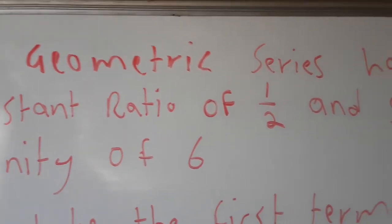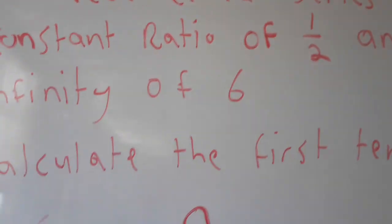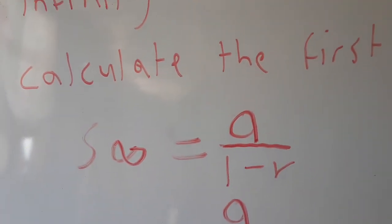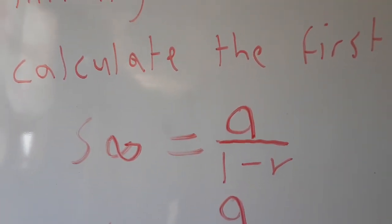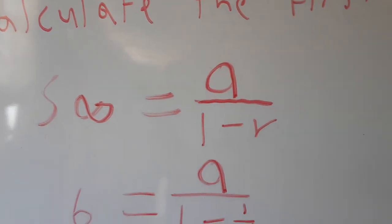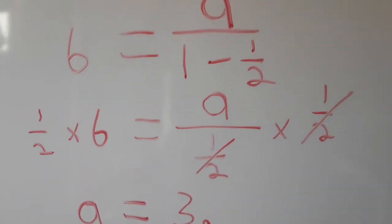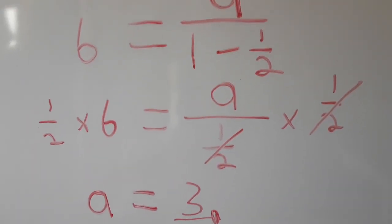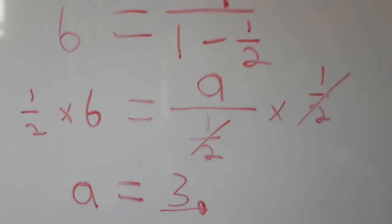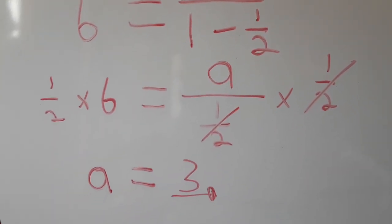This is how you calculate the first term when you are given the constant ratio and the sum to infinity — use the sum to infinity formula. The first term is three. Thank you very much for your time, and don't forget to subscribe.